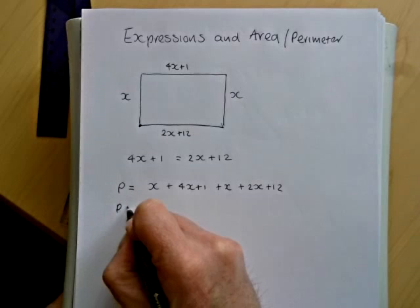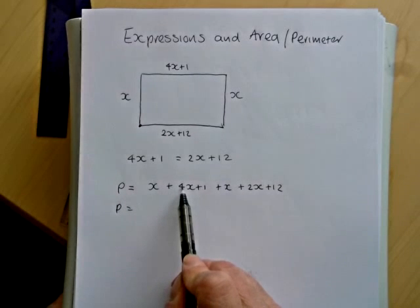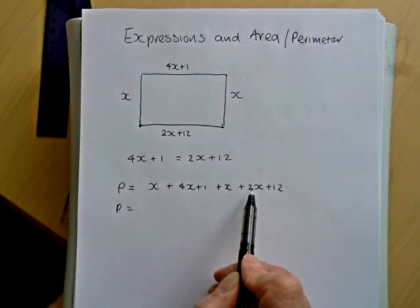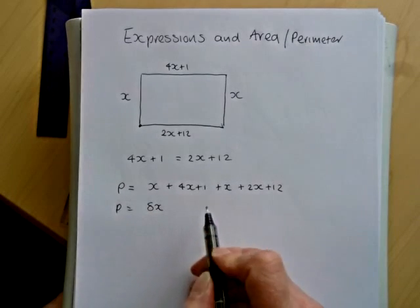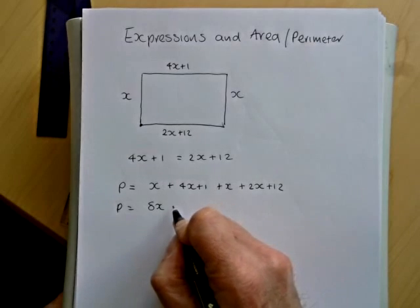So we can make that simpler by counting up all the x's. So we've got 1 and 4 is 5, 6, 7, 8. We've got 8x altogether and we've got 1 and 12 plus 13.